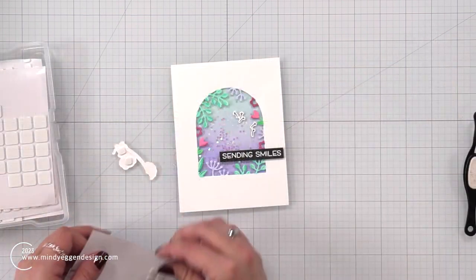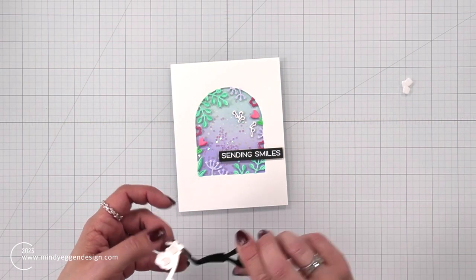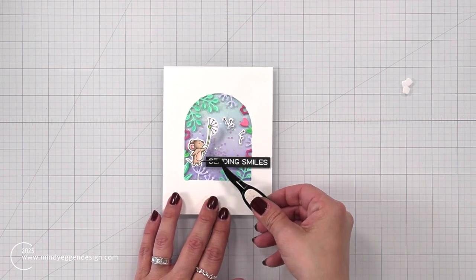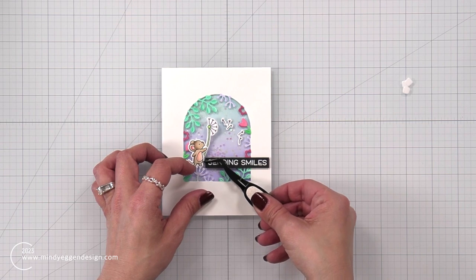Now I am going to go ahead and add some thin foam squares to the back of my mouse. And here I'm going to tuck it underneath some of those pieces there in the window. So he's not really standing on top of it, but I just slightly tucked underneath.